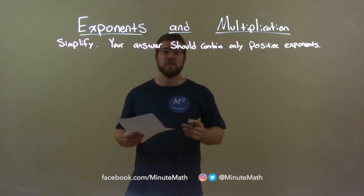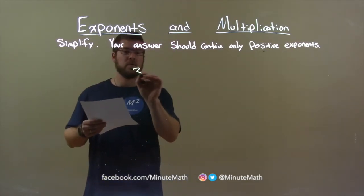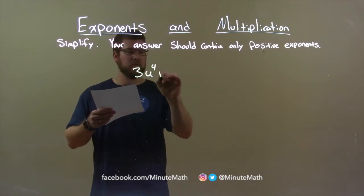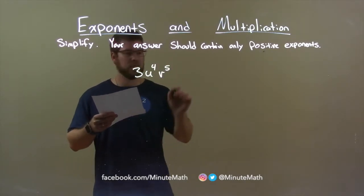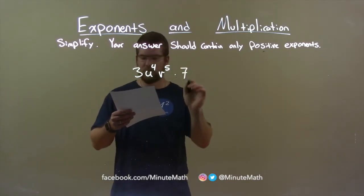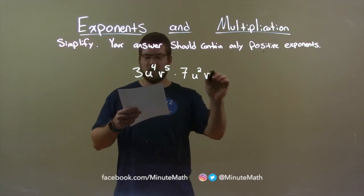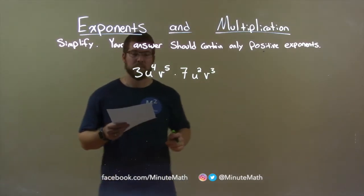So if I was given this problem: 3u to the 4th power, v to the 5th power, and that can be multiplied by 7u squared times v to the 3rd power. Alright?